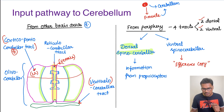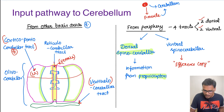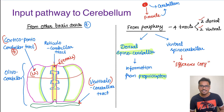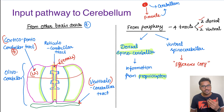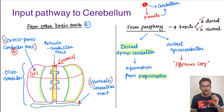The dorsal spino-cerebellar tract receives information from proprioceptors — muscle spindles and Golgi tendon organs. This information from the muscle spindles is constantly updated to the cerebellum, so the cerebellum always knows the position of the person.